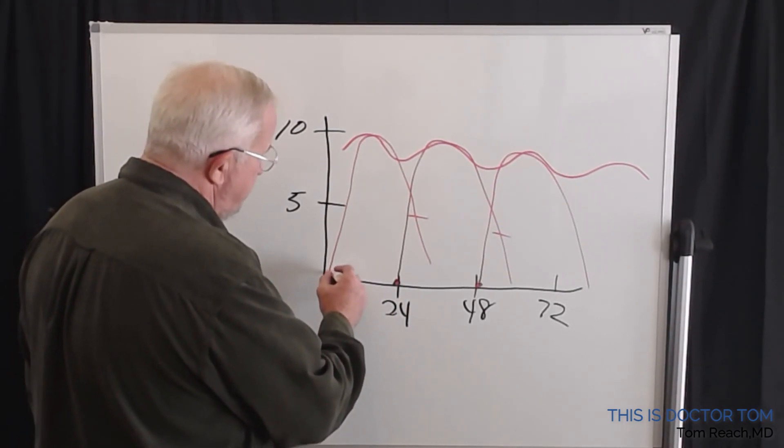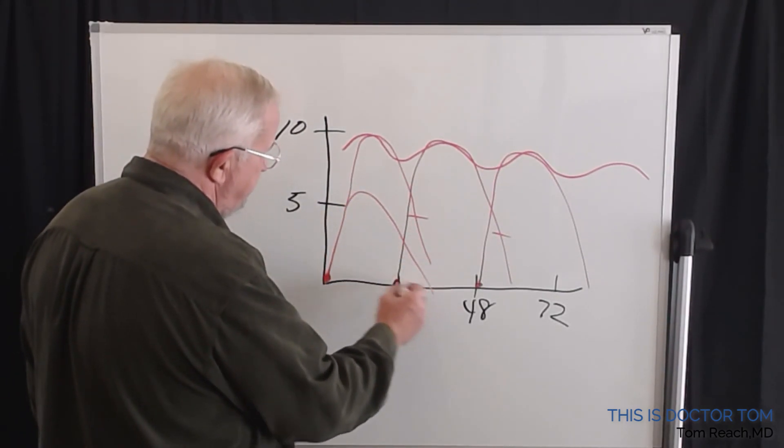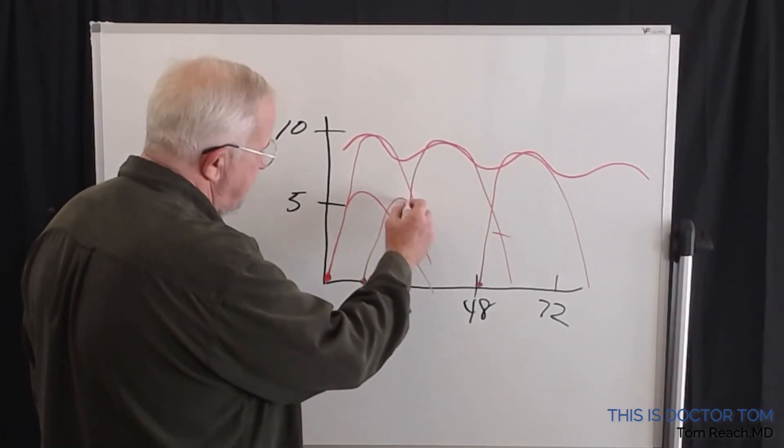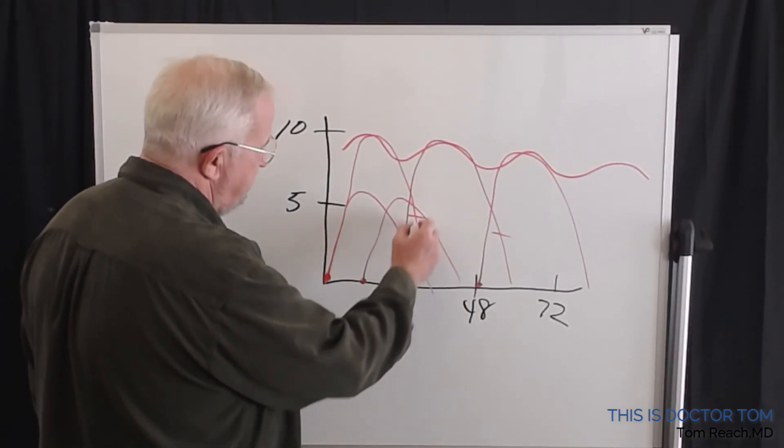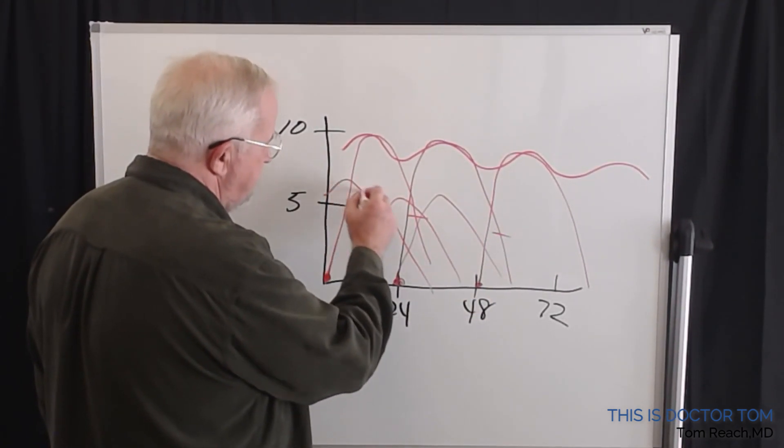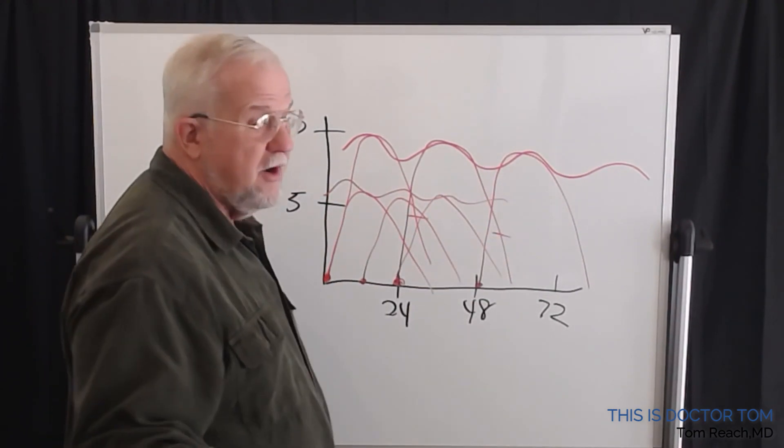You take it twice a day, you're taking half the amount of medicine, but you still have the same process where it's going to take 30 hours for it to go away. You actually end up with a little bit lower level, usually not enough to account.